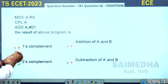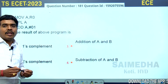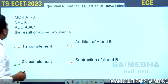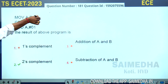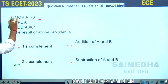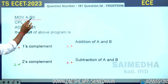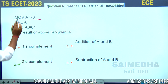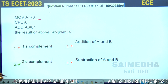They are asking the result of the above program. The first instruction is MOVE A, R0. Because of this instruction, the content of R0 is loaded into the accumulator.